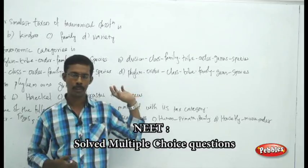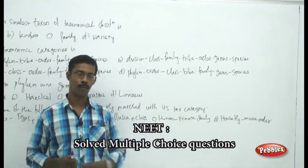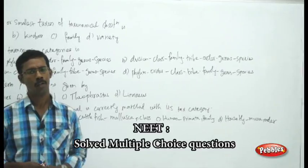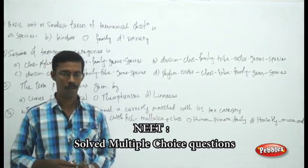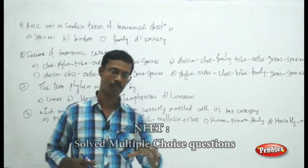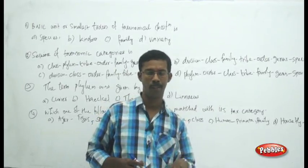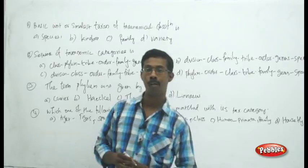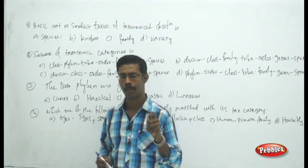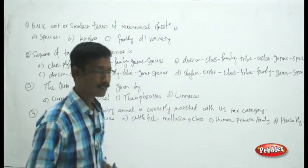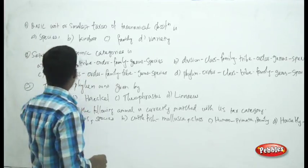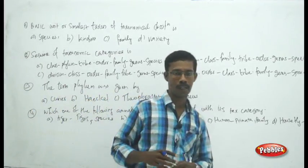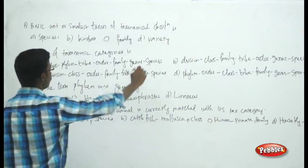We are going to start the questions we can expect from the first unit, beginning with the chapter Living World. In the Living World, we have seen something about taxonomy, taxonomic levels, how the living world is classified, and what characters we consider for living things. The first question asks about the basic or smallest unit of taxonomic classification.